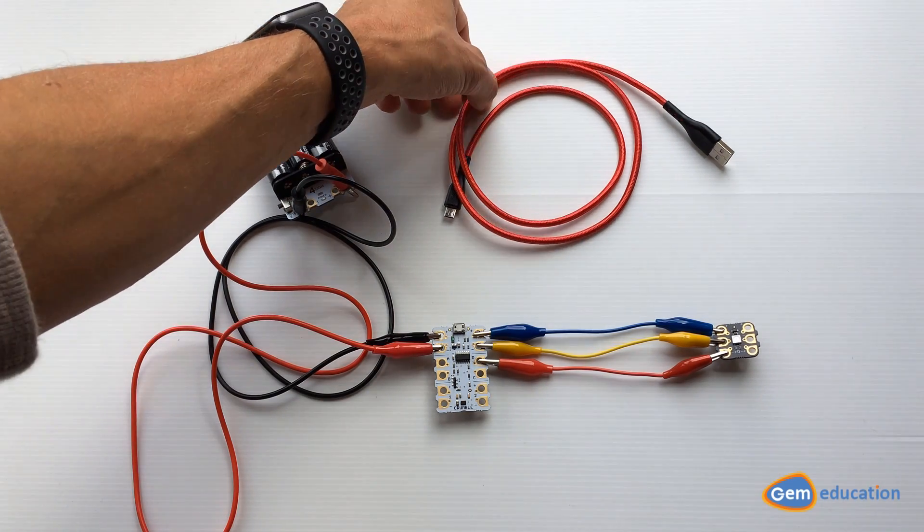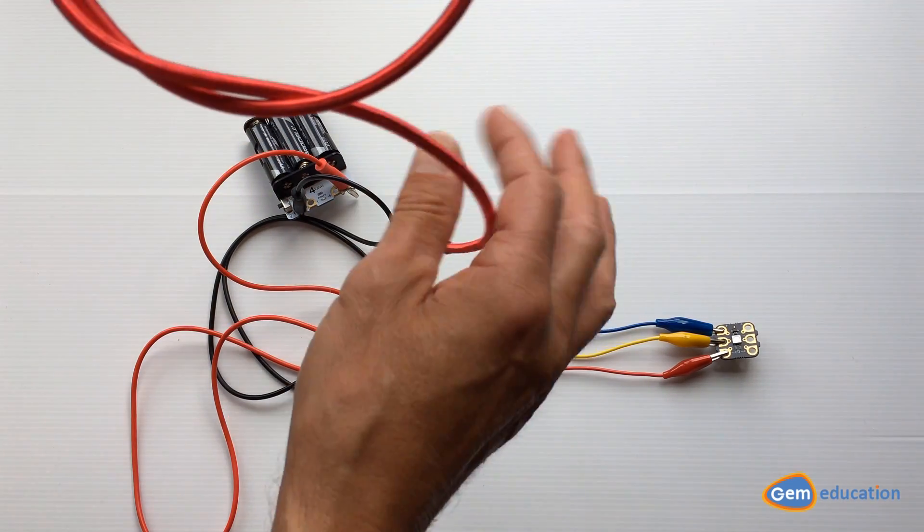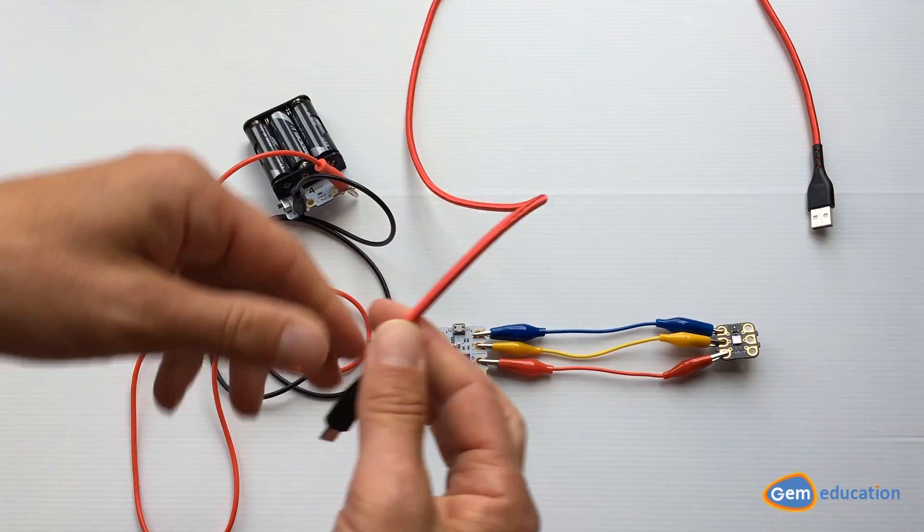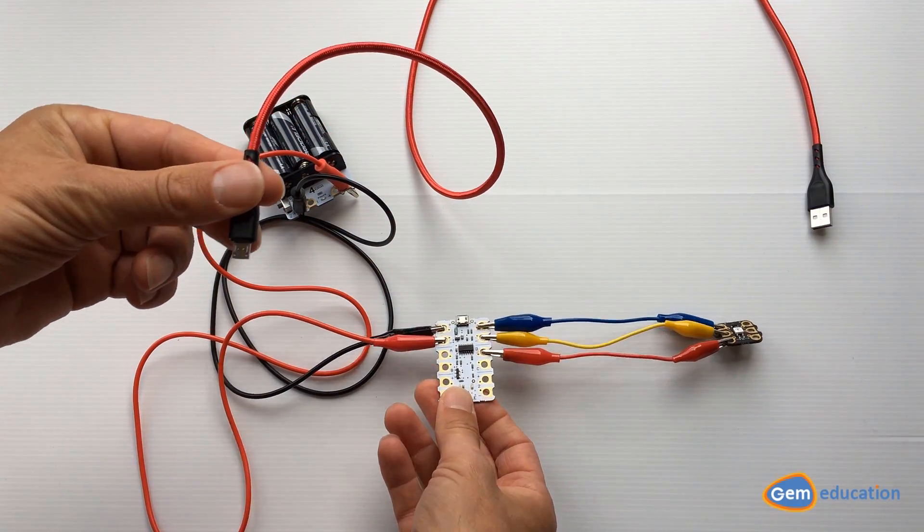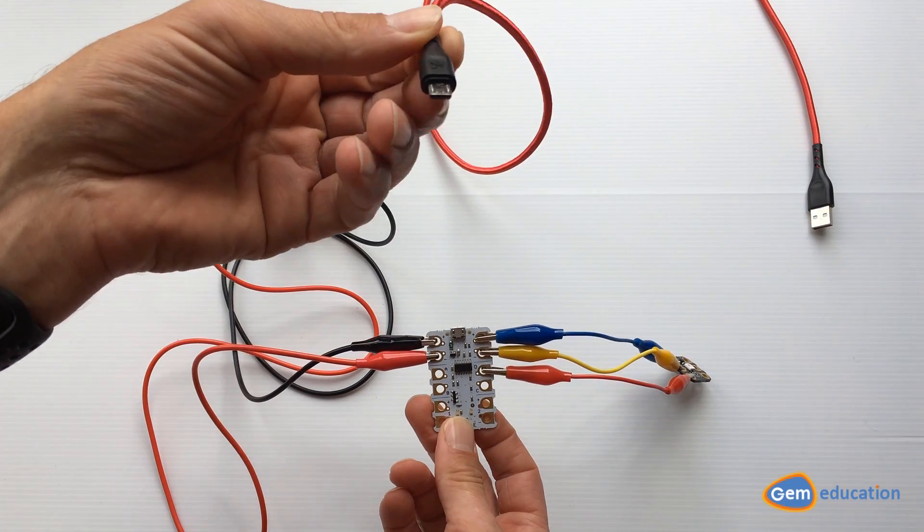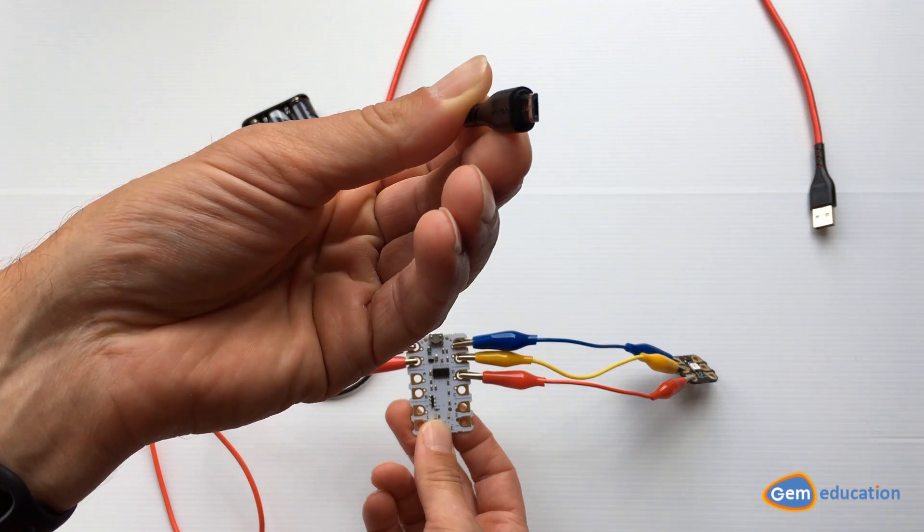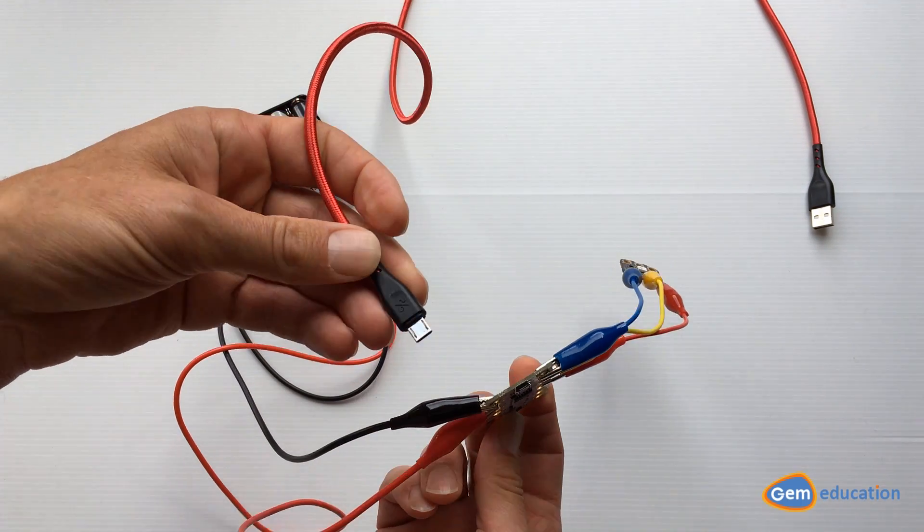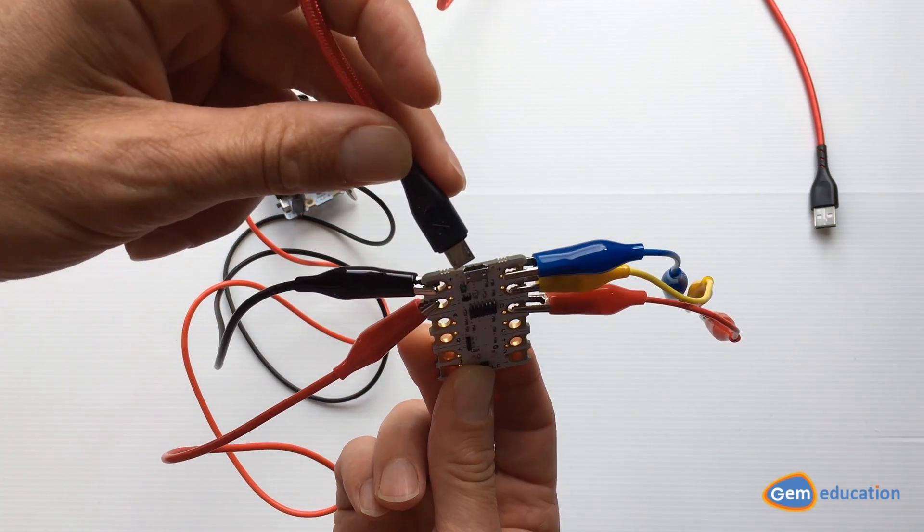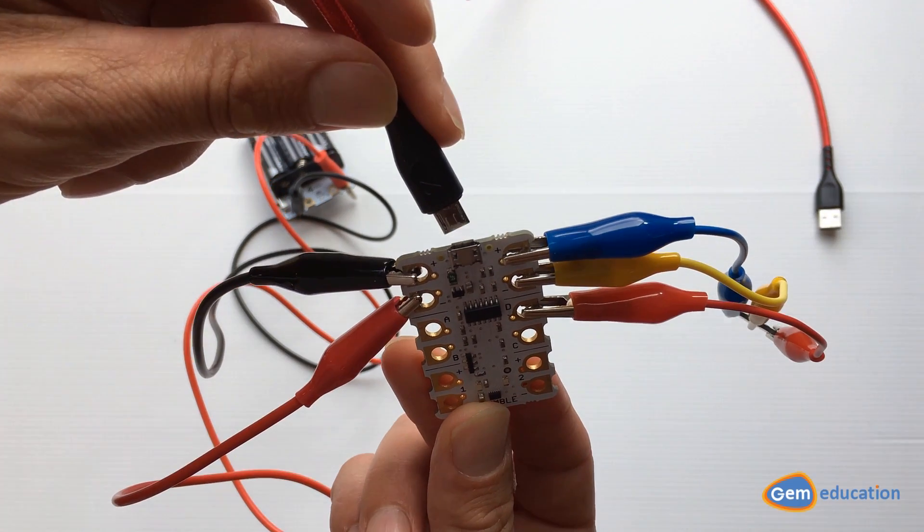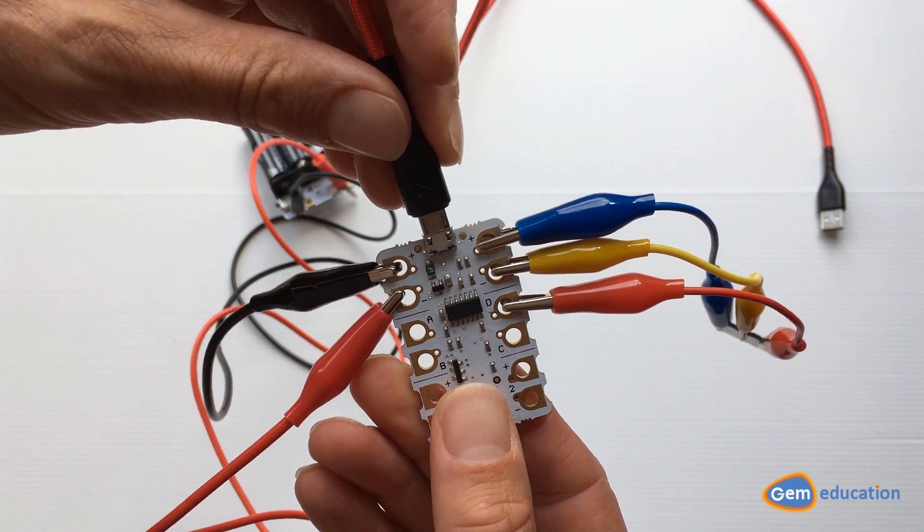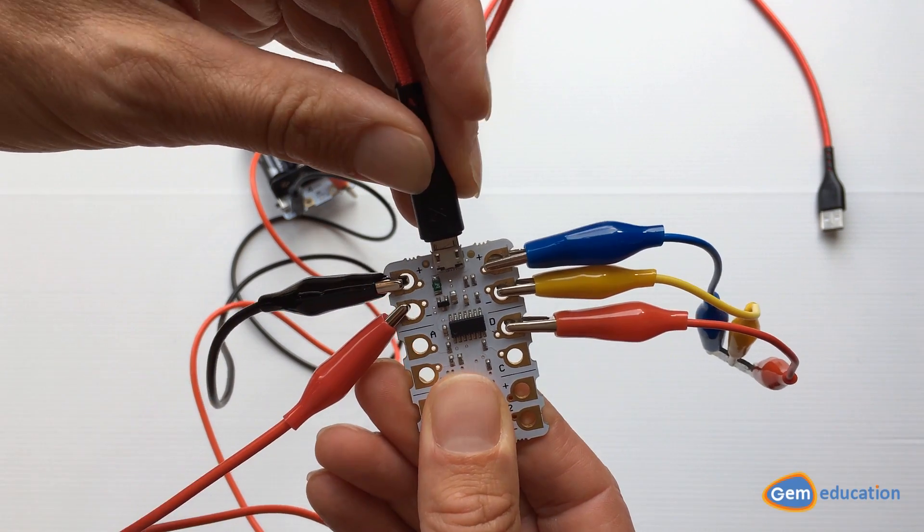The last thing to do now is connect my micro USB lead to my crumble and then to the computer. On the micro USB leads, you've got a long side and a short side, so make sure you're attaching it correctly into your crumble. You don't want to be too hard with it because you might break it. Just gently make sure the long sides are lined up.